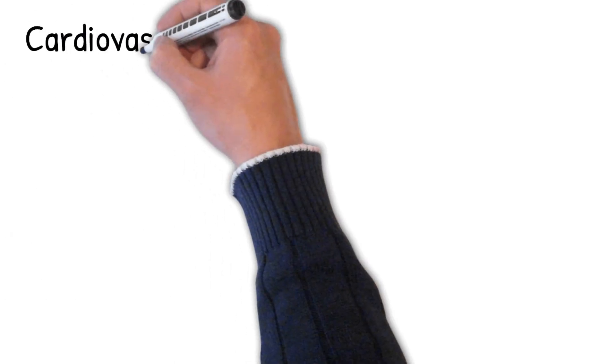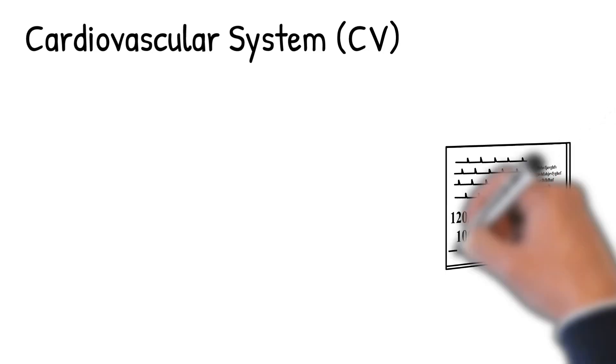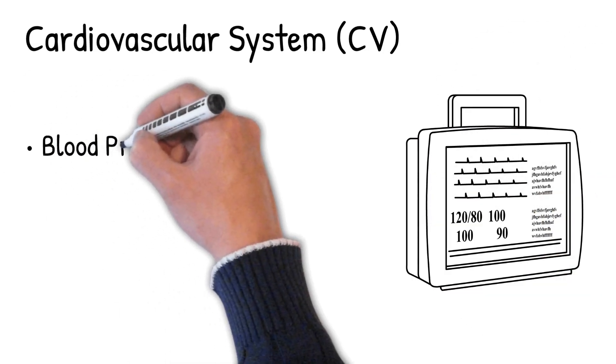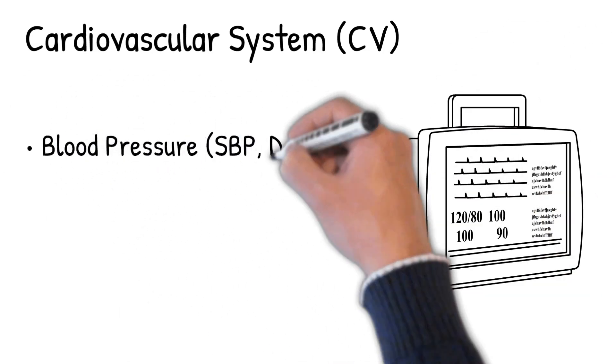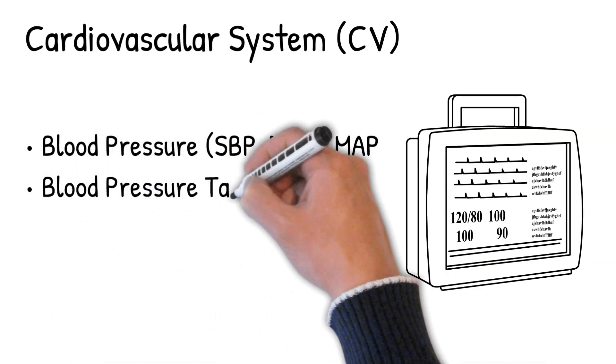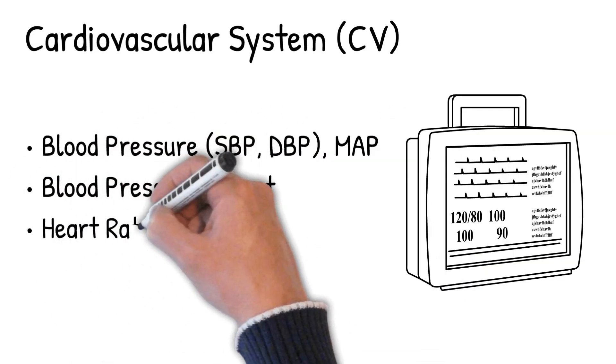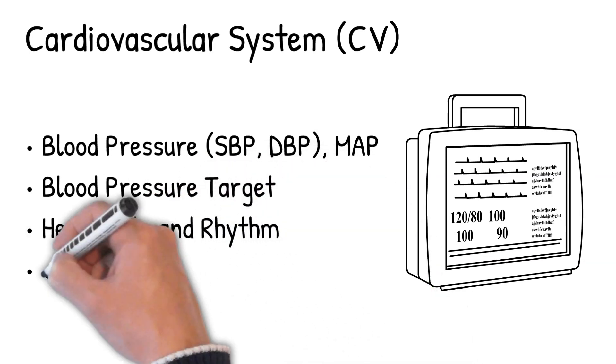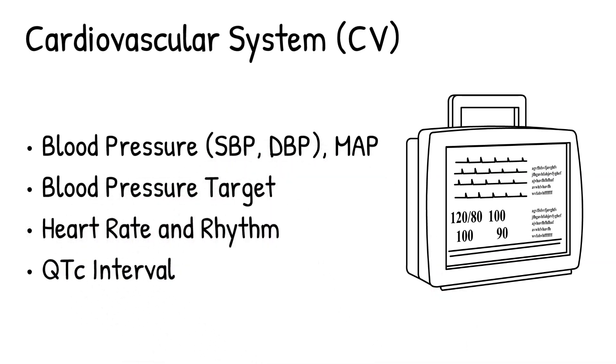Next is the cardiovascular system where you look at the monitor and check the blood pressure of the patient - systolic blood pressure, diastolic blood pressure, mean arterial pressure. Check the blood pressure target that you need for that patient, the heart rate, the heart rhythm, presence of arrhythmias, and the QTC interval for drug interactions.